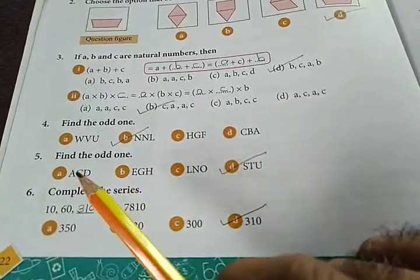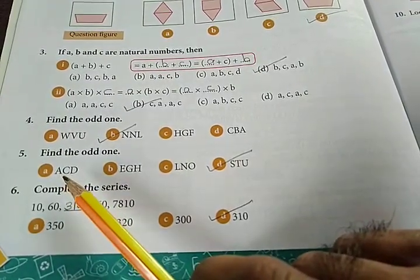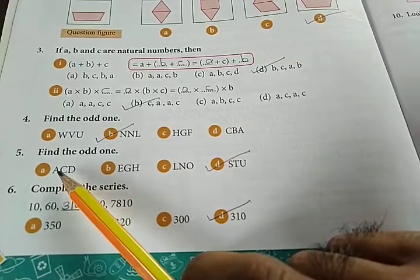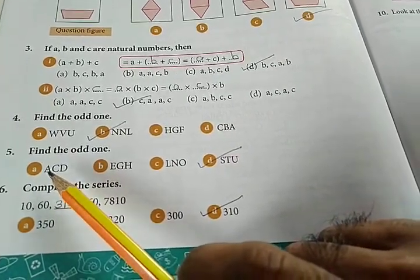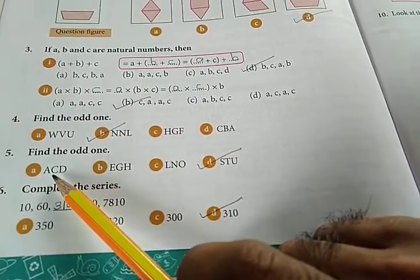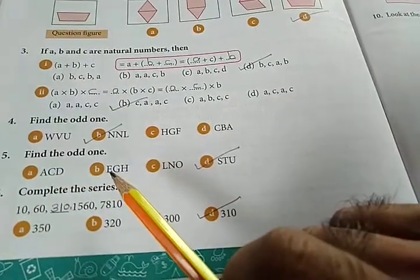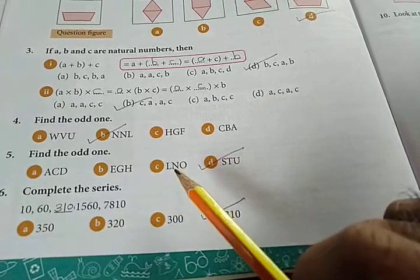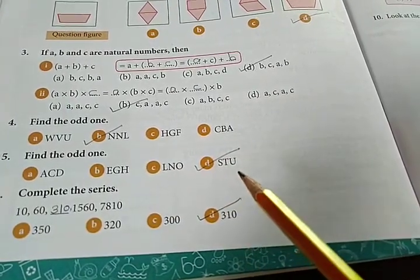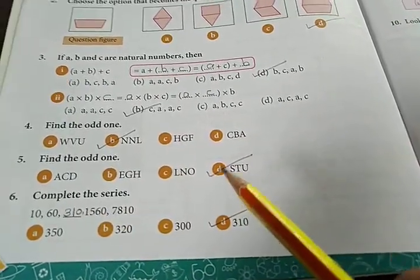Then find the odd one. Now look, here it's a, c, d. Actually after every first alphabet, they have skipped the second alphabet and given the next alphabet. Like here b is hidden. a, c, d. e - here f is hidden - e, g, h. l - here m is hidden. But here there is no hidden letter in the sequence, it's given as s, t, u. So D is the correct answer.